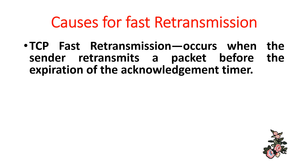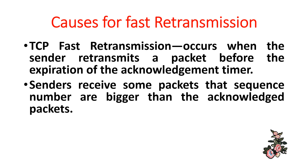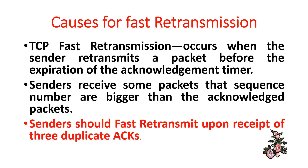TCP fast retransmission occurs when the sender retransmits a packet before the expiration of the acknowledgement timer. The sender receives packets whose sequence numbers are bigger than the acknowledged packets. The sender should fast retransmit upon receipt of three duplicate acknowledgements.